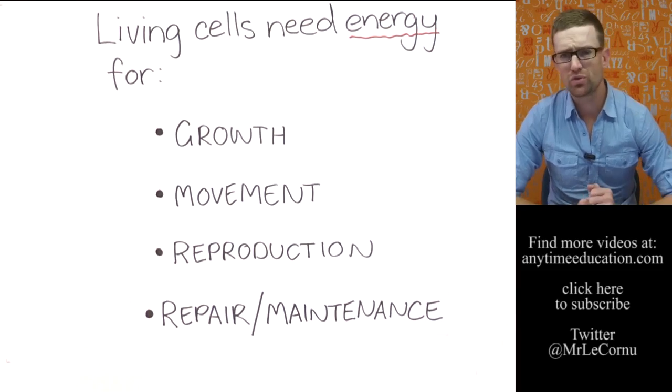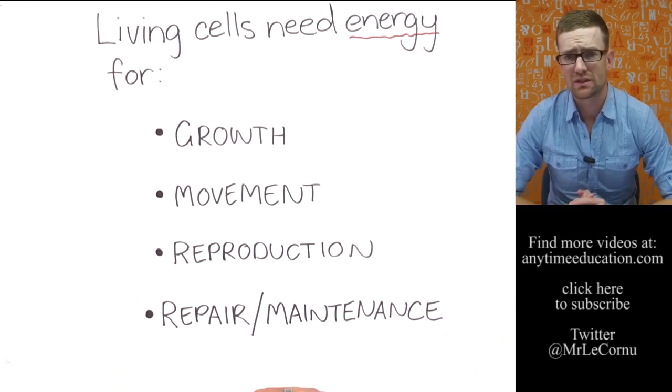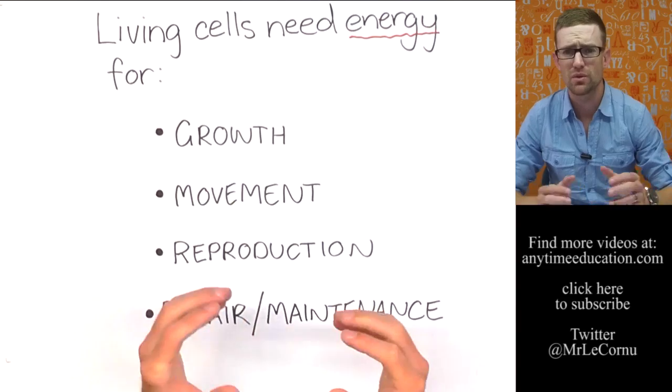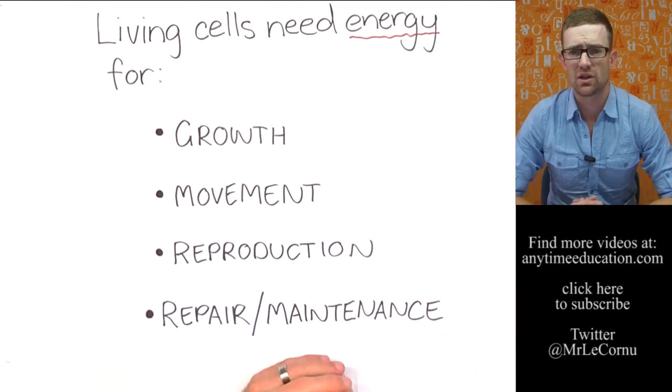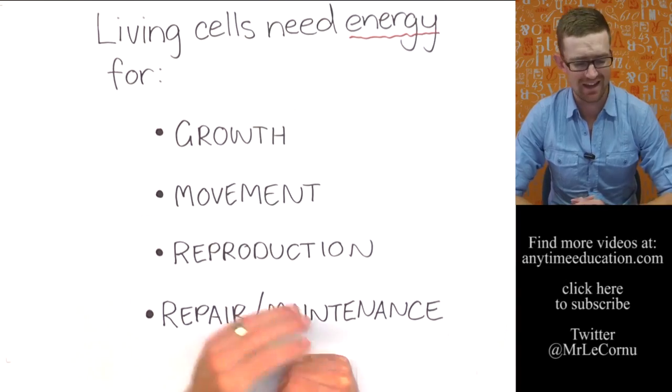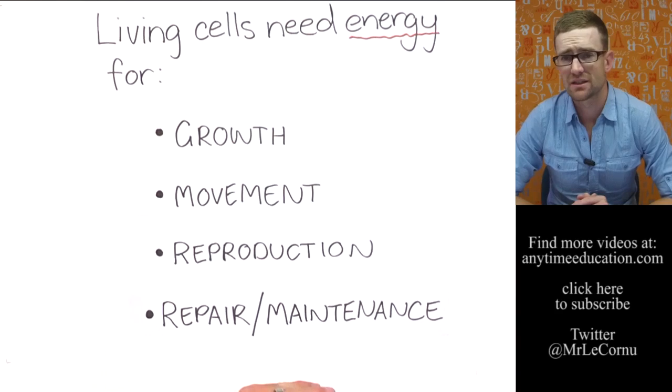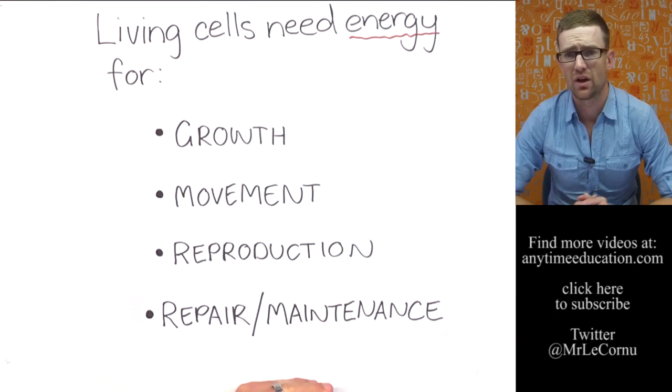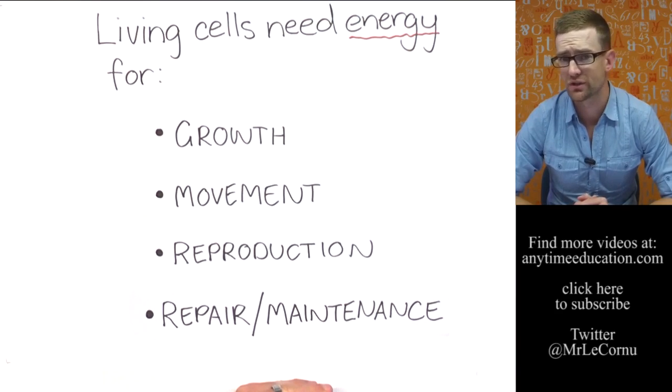And movement, the cell itself can move in some cases, so the whole cell movement, but also movement of things within the cell. That's a type of movement that needs energy for a cell. Reproduction, yes, cells do reproduce. They divide through processes like mitosis or binary fission or meiosis as well.